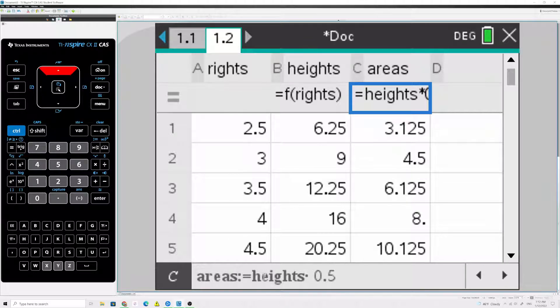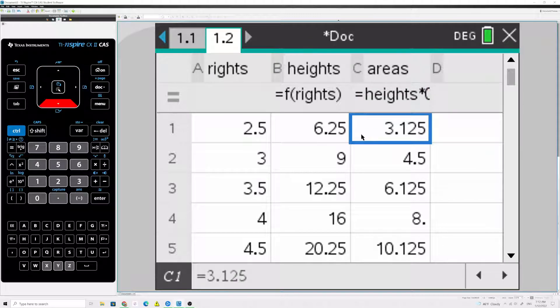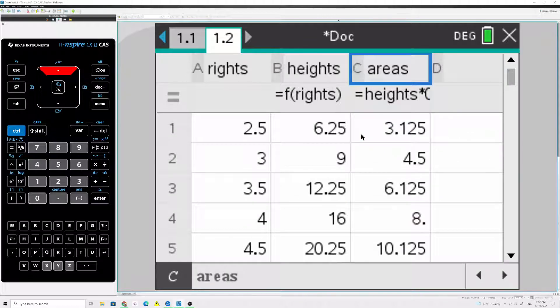And you can see down at the bottom, we have the height times the width, 0.5. So, all of our areas, the areas of all the rectangles, are stored in this column named areas.